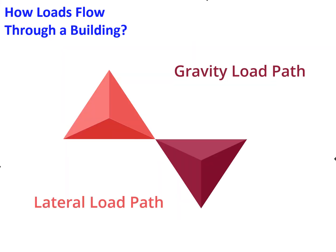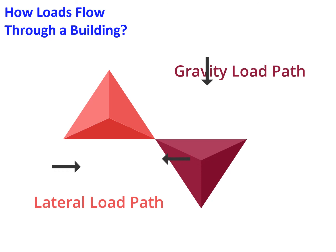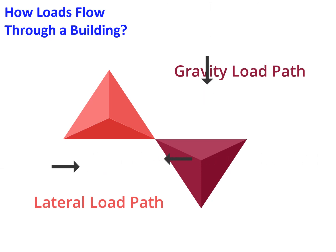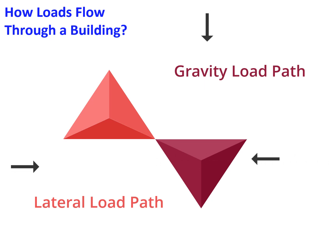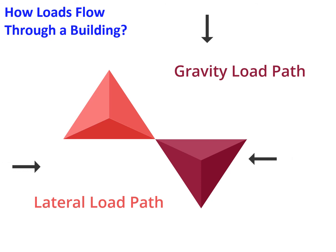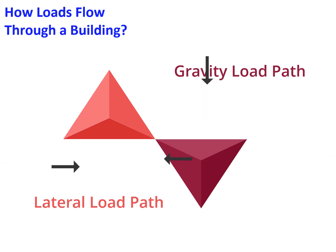The load path can be identified by considering the elements in the building that contribute to resisting the load, and by observing how they transmit the load to the next element — depending on the type of load to be transferred. There are two basic load paths: gravity load path and lateral load path.